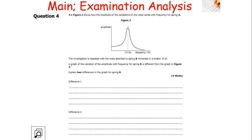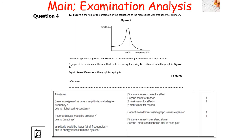Figure 2 shows how the amplitude of oscillations varies with frequency for spring A. The investigation is repeated with the mass on spring B immersed in a beaker of oil. There are two differences in the graph for spring B: first, there is a resonance peak at a higher frequency because spring B has a higher spring constant. Second, because the oil causes damping, the peak will be broader, the amplitude will be lower at all frequencies due to energy losses, and the resonant frequency may shift slightly to the left.